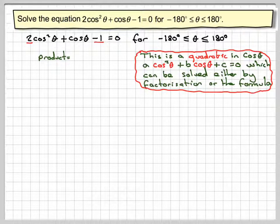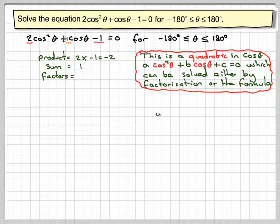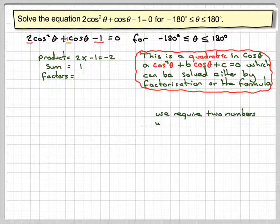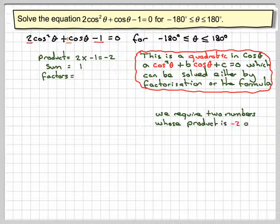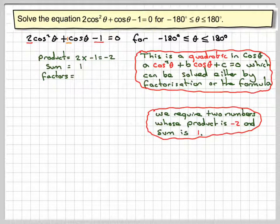The product, if you're going to use this method of factorization, is 2 times minus 1 which gives me minus 2, and the sum is the number in front of cos theta. There's no number, so this time it's just plus 1. Then you ask yourself for two numbers which when you multiply them together or the product will be minus 2, and the sum of those two numbers will be 1.